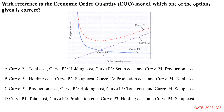Let's see the question. With reference to the Economic Order Quantity, that is the EOQ model, which one of the options is correct? A graph is given for order quantity versus cost per unit, representing various curves. Options are given for various costs related to different inventory costs.